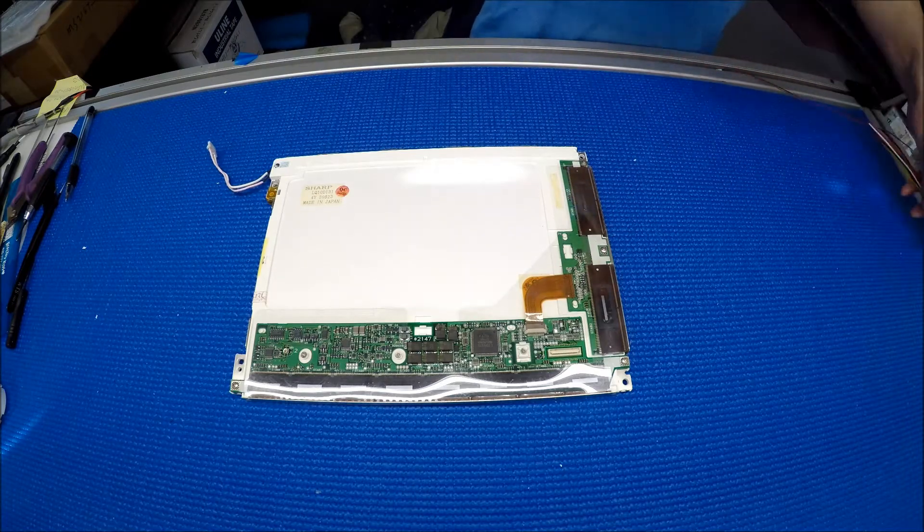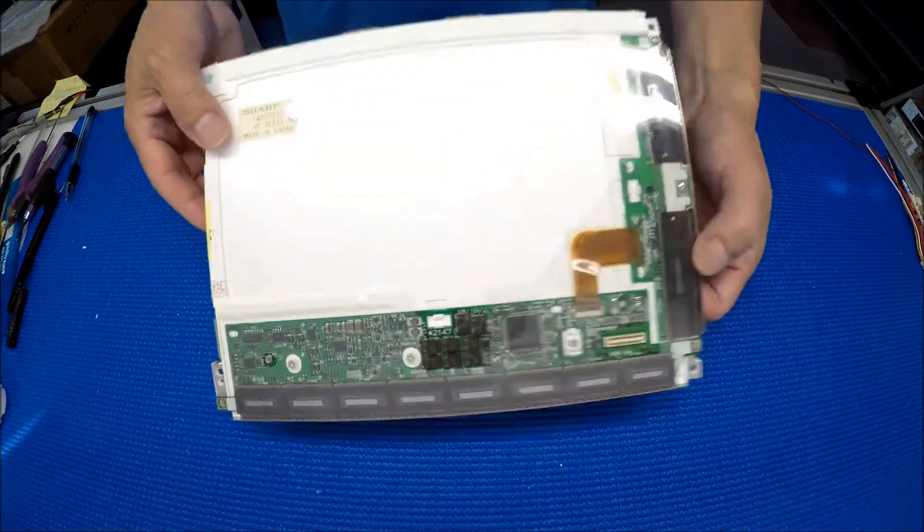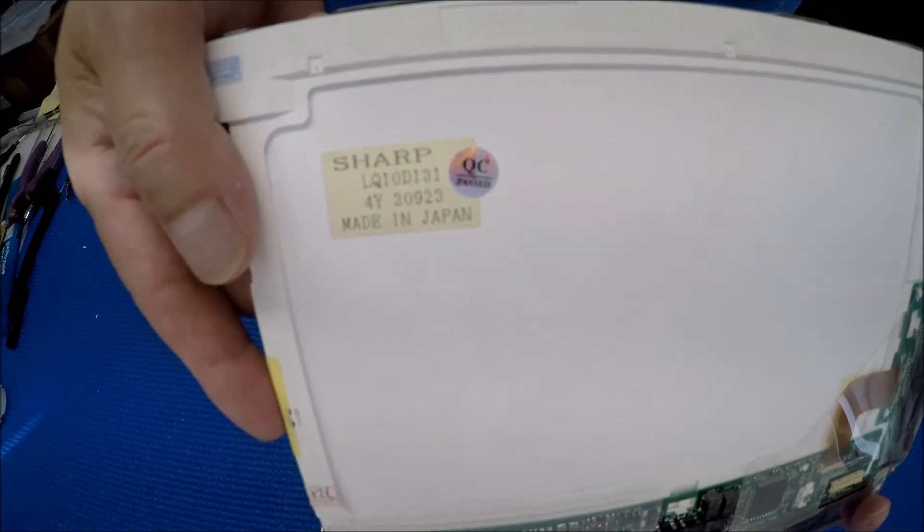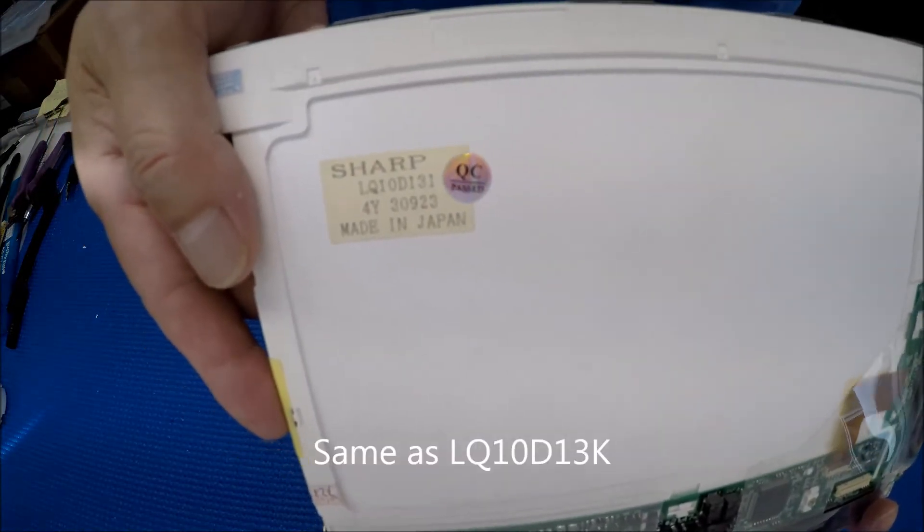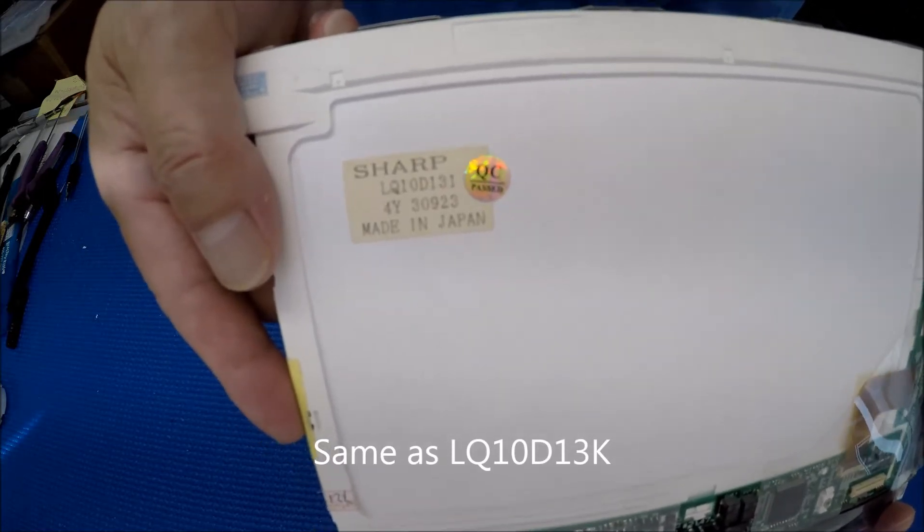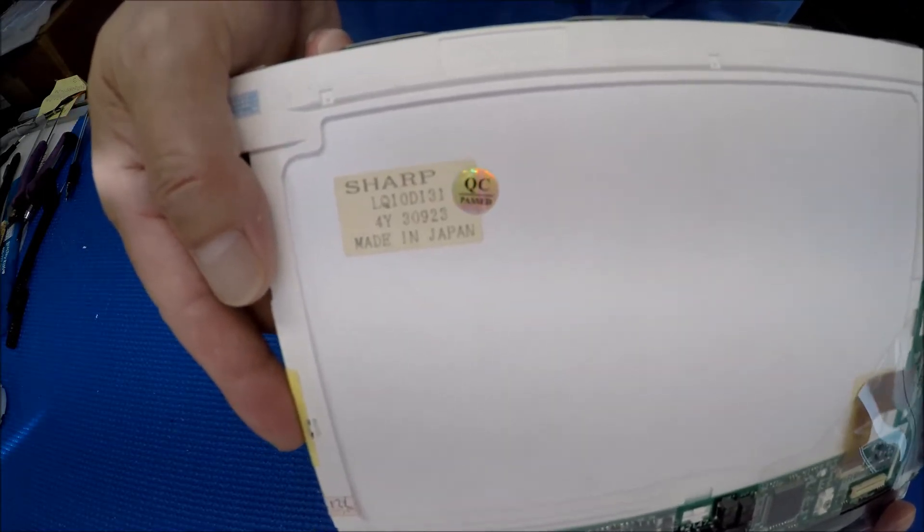So let's set aside the LED kit, take a look at the screen. This screen is made by Sharp. The part name is LQ10D131. So it is exactly the same as LQ10D13K.